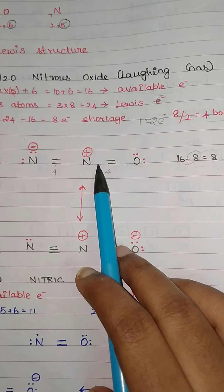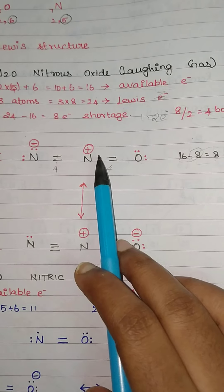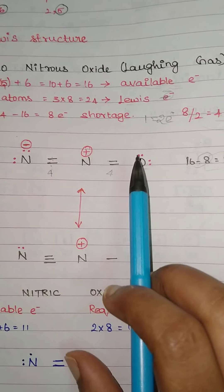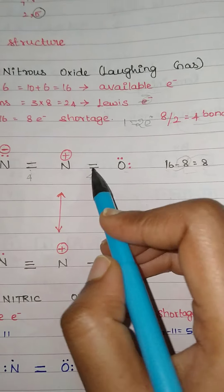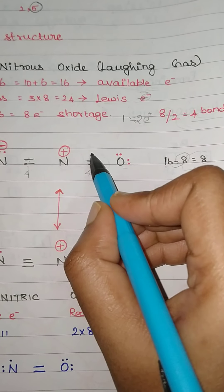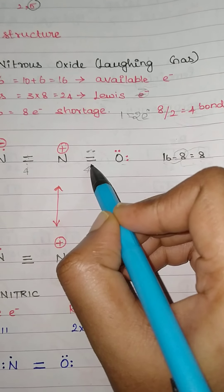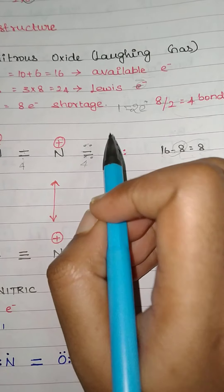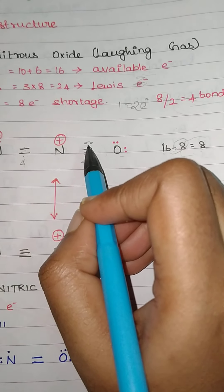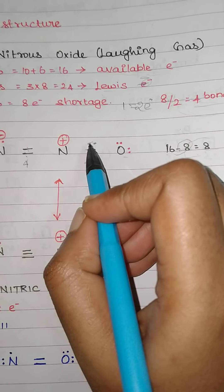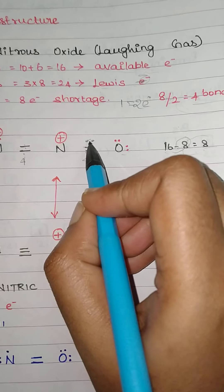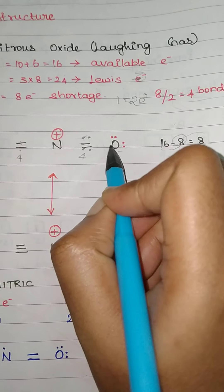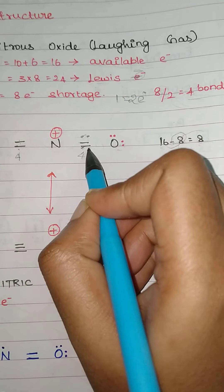After filling all the electrons in the structure you have to put the charge. How to calculate the charge? So each bond carries 2 electrons — when calculating the formal charge, you should split each bonding pair so that 1 electron goes to nitrogen and 1 electron goes to oxygen from the same bond.